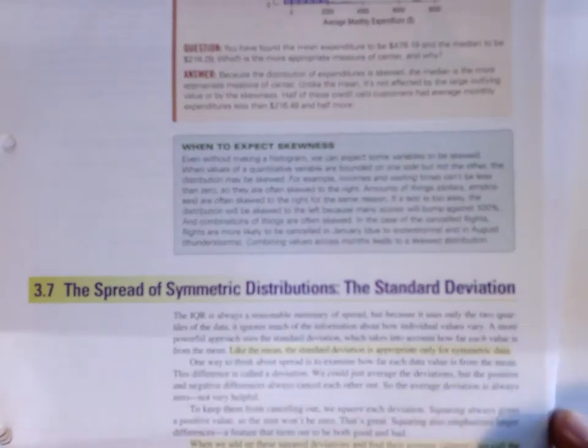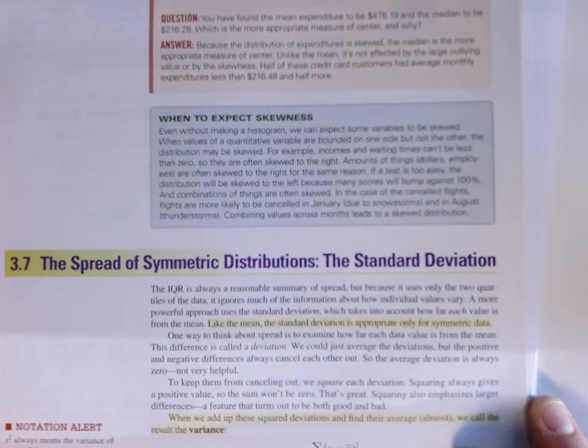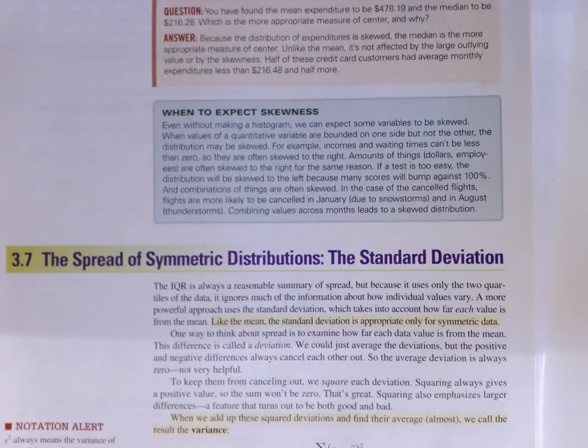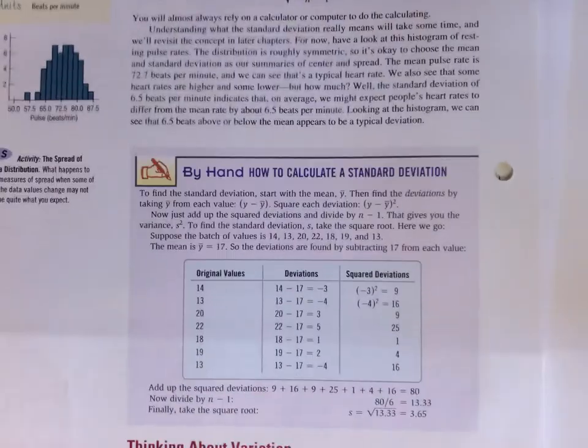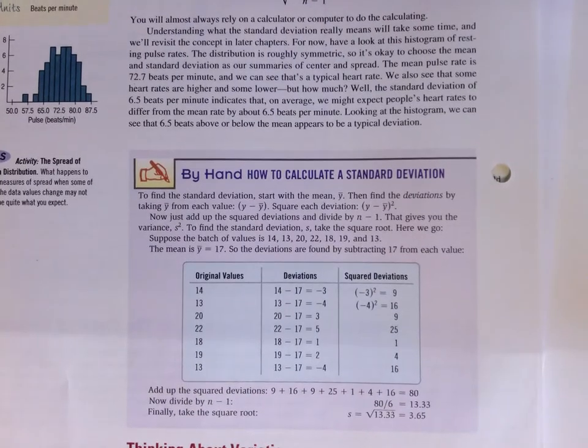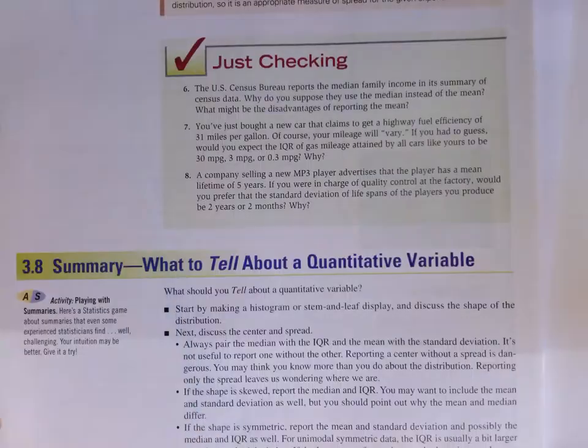And then we can start talking about how we would measure the center of symmetric distributions and the idea of the mean. There are very few formulas in the book, and this is one of them, but I think it's one you're already familiar with. Comparison of the mean and the median is important, again, a review for the most part.